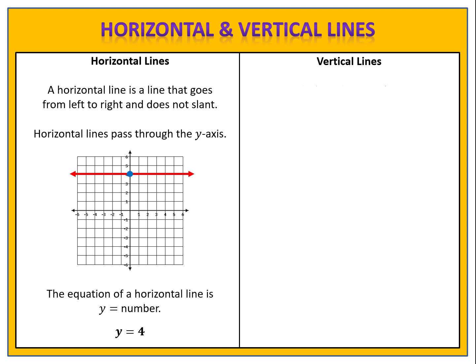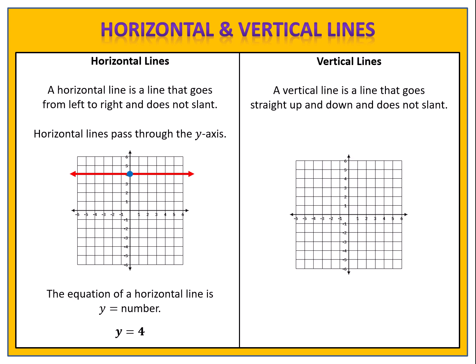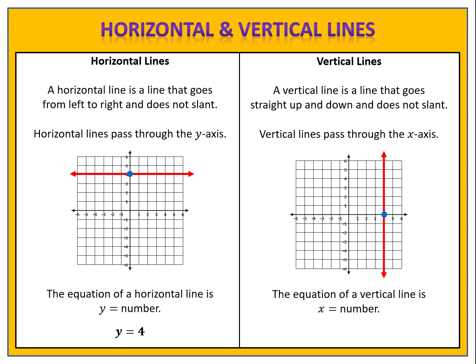A vertical line, on the other hand, is a line that goes straight up and down and does not slant. A vertical line passes through the x-axis, and the equation of a vertical line is x equals a number. This vertical line passes through the x-axis at 4, so the equation of the line is x equals 4.